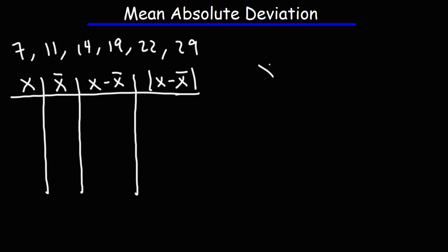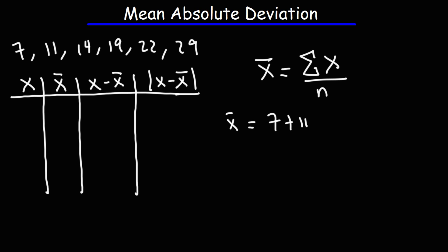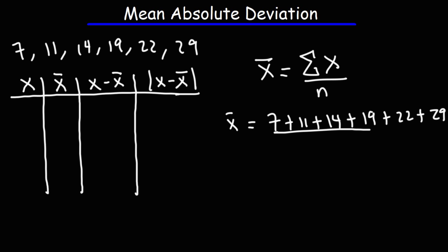The first thing we need to do is calculate the arithmetic mean of these six numbers. It's going to be the sum of all the x values divided by n — so it's 7 plus 11 plus 14 plus 19 plus 22 plus 29, divided by n where n is 6.